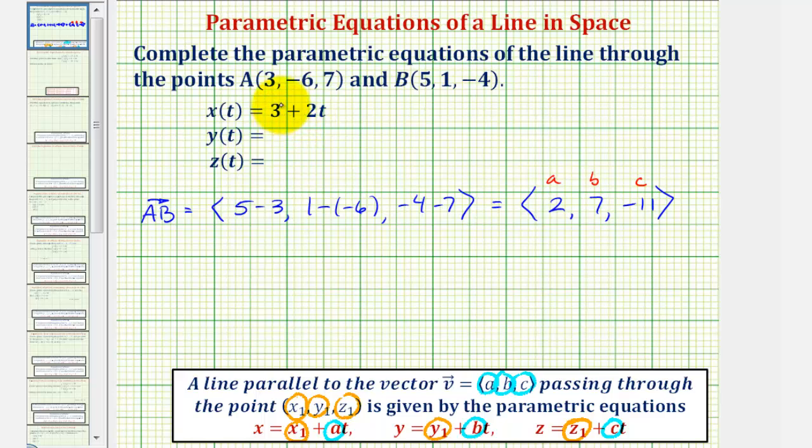Notice how this constant here is 3, which means we should use the point with an x-coordinate of 3. So we'll be using point A to write our parametric equations.